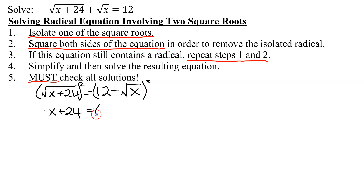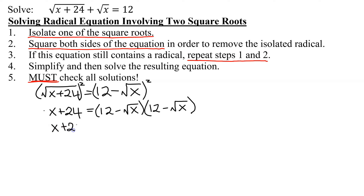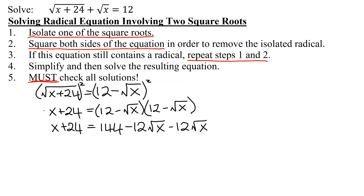There are several different ways of doing this, and I'm going to go with the tried-and-true method of FOILing it out. Some students get confused when binomials contain radicals. So FOILing it out: first terms, 12 times 12 is 144. Outer: 12 times negative square root of x is negative 12 square root of x. Inner: negative square root of x times 12 is another negative 12 square root of x. Last term: negative square root of x times negative square root of x is positive square root of x all squared.